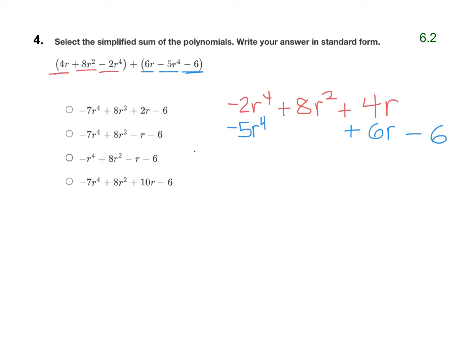So be really careful when you're lining up your like terms. Sometimes you'll skip some places, like here. There was no r squared in my second polynomial, so I don't have anything to combine with that.